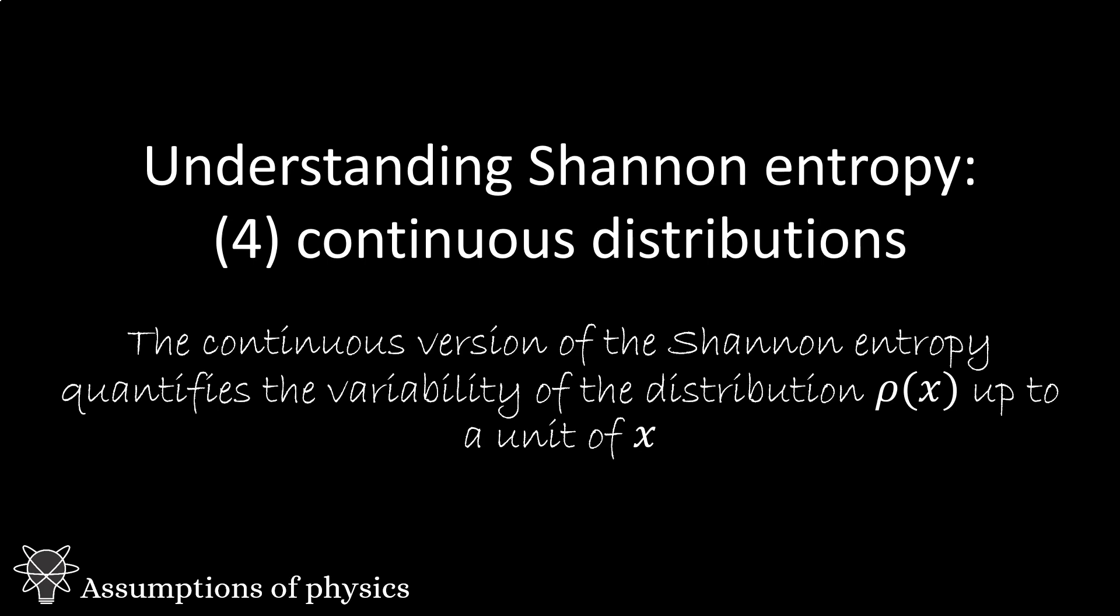In the previous videos we saw three different ways to derive the Shannon entropy. In all three we assumed the distribution was over discrete values. In this video we'll see how it works for continuous values, which is another source of confusion.